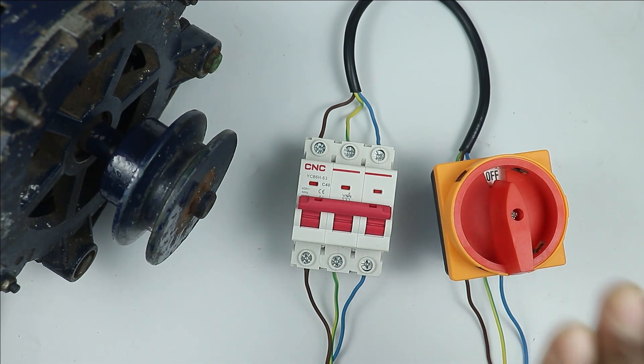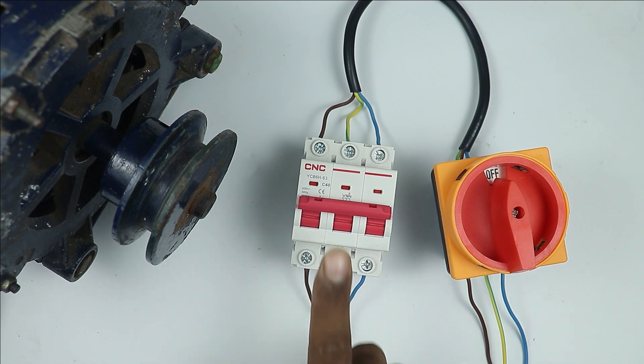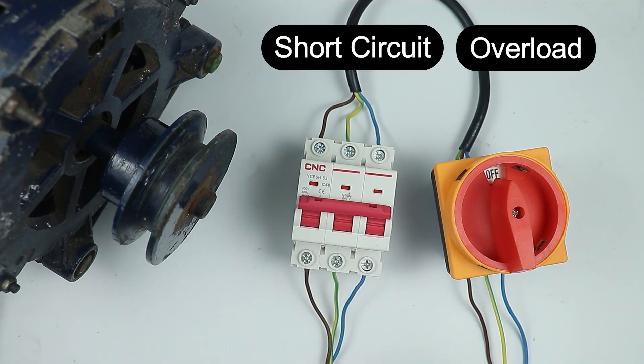Friends, if you are going to use rotary switch for turning on or off the motor, then keep this in mind that motor will not get any kind of protection. For protection, always use a MCB so that you will get protection from overload and short circuit.